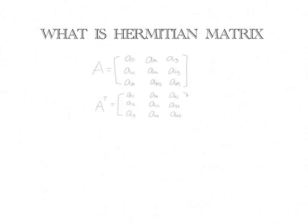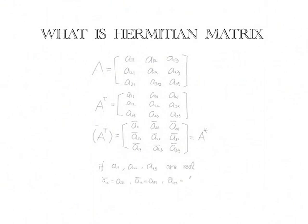Now we get a matrix and transpose it, then make it conjugate. If all diagonal components are real and all other components are conjugate, then A is equal to A adjoint. We can say the matrix A is a Hermitian matrix.